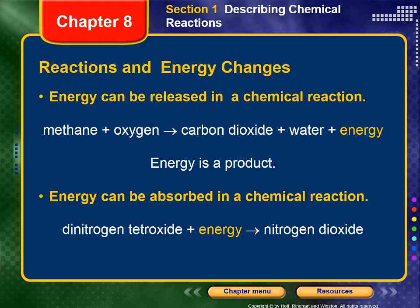There is also energy movement in reactions. Energy can be released in a chemical reaction, and we would represent energy being released as a product. For example: methane reacts with oxygen to form carbon dioxide, water, and energy. Energy is a product. As a result of this reaction, heat is released, and the area around this reaction will get warmer because heat energy is being put into the surroundings.